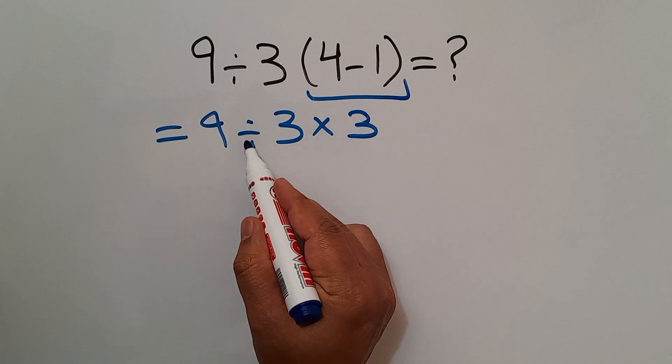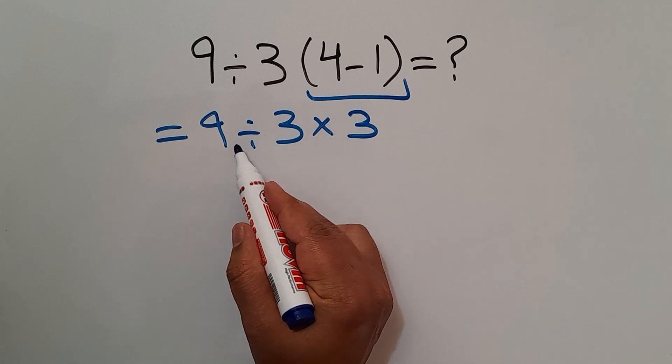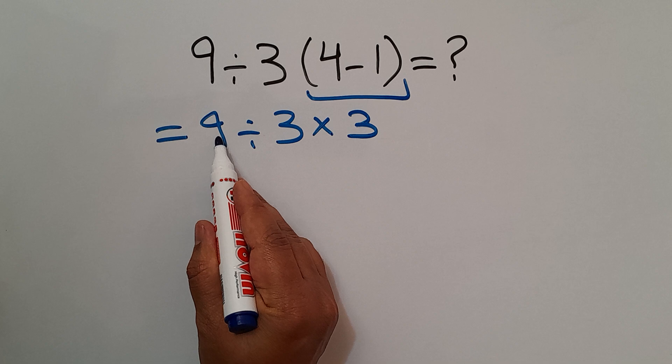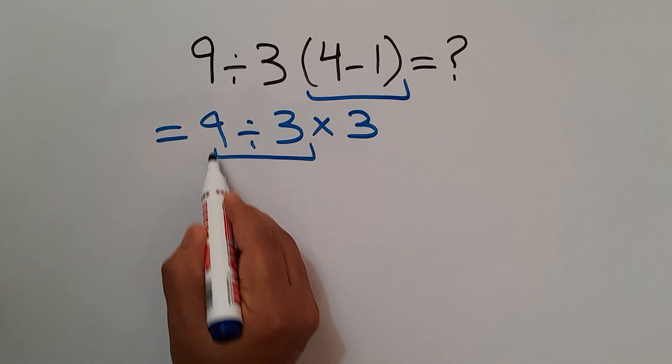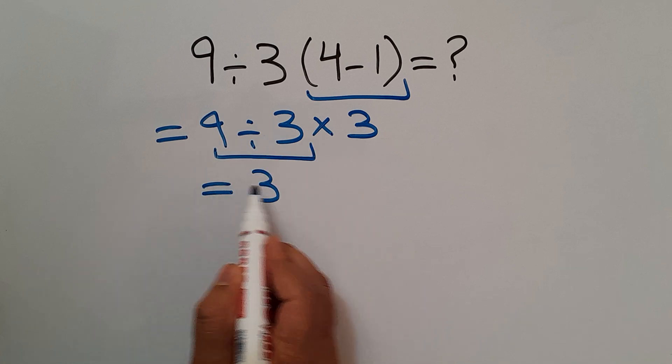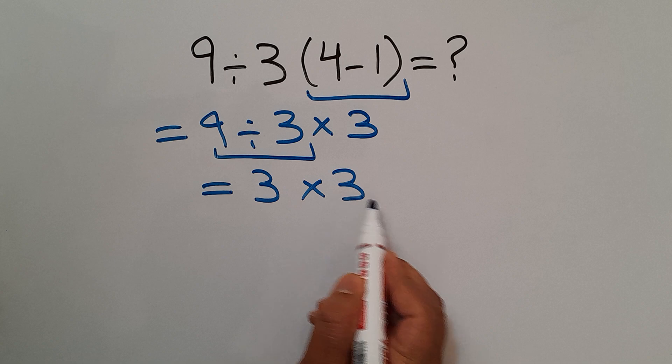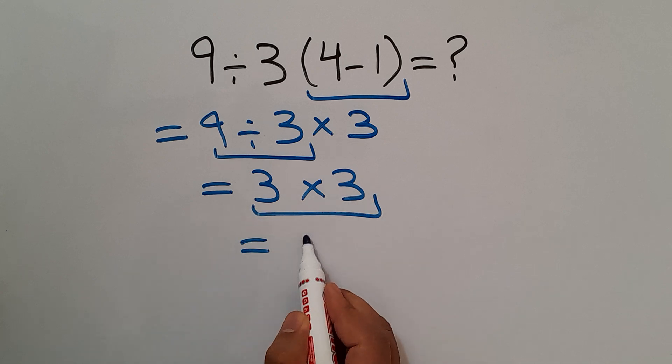As we know, multiplication and division have equal priority and we have to work from left to right. So first 9 divided by 3 which equals 3. So we have 3 times 3 and this is equal to 9.